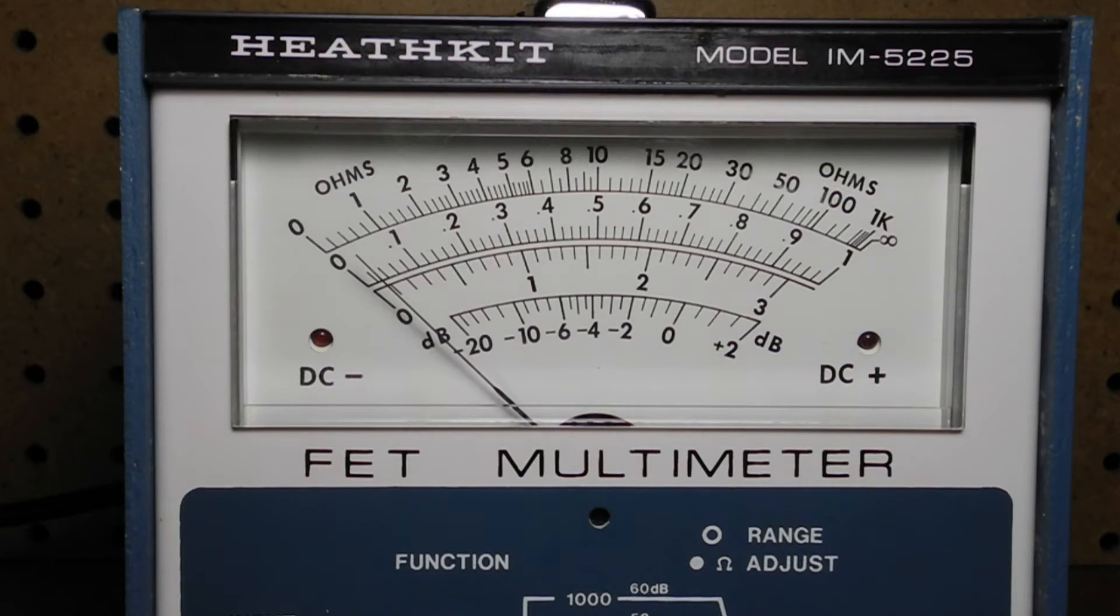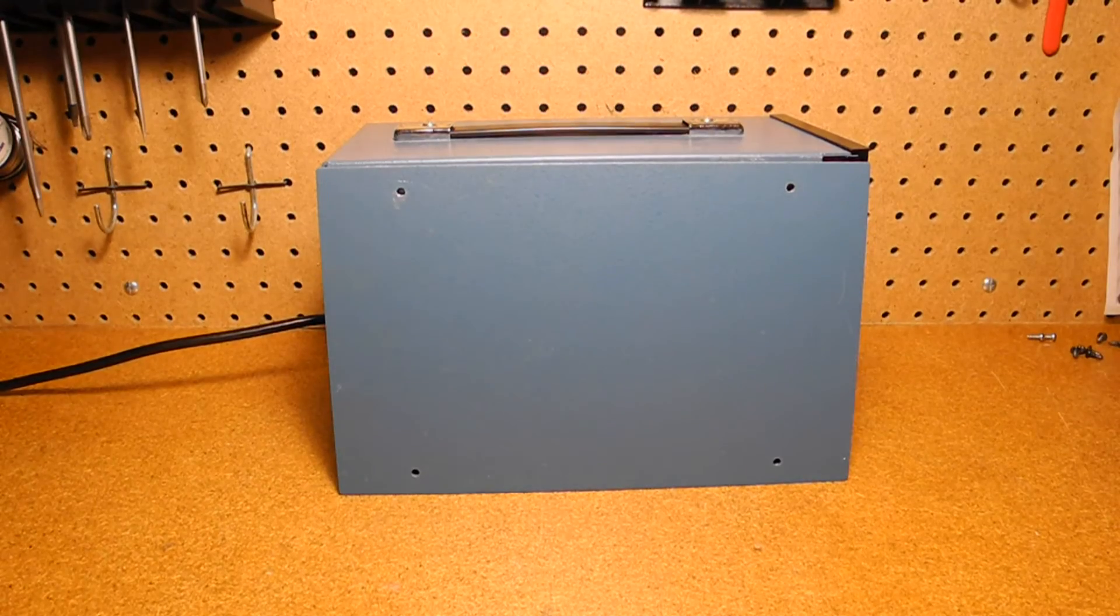The meter has scales for ohms which must be multiplied by the corresponding factor for the range and scales marked from zero to one and zero to three for the current and voltage ranges. It also has a decibel scale from minus 20 to plus 2 dB which needs to be added to the indicated decibel value shown on the voltage range switch to convert to dBm. Red LEDs on either side of the meter indicate the polarity of the measured DC voltage or current and are not used for AC or ohms. Let's take a look inside.